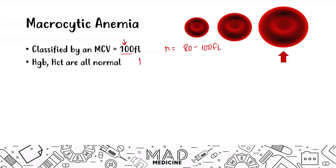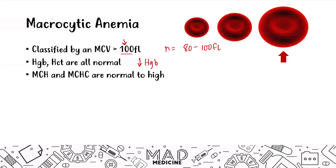You can also see decreased hemoglobin essentially because you have less production of red blood cells, but the hemoglobin concentrations might be normal. The MCHC and the MCH — the mean corpuscular hemoglobin and mean corpuscular hemoglobin concentration — are going to be normal to high, just because you have a large cell. Because you have a large red blood cell, they're going to contain more hemoglobin.